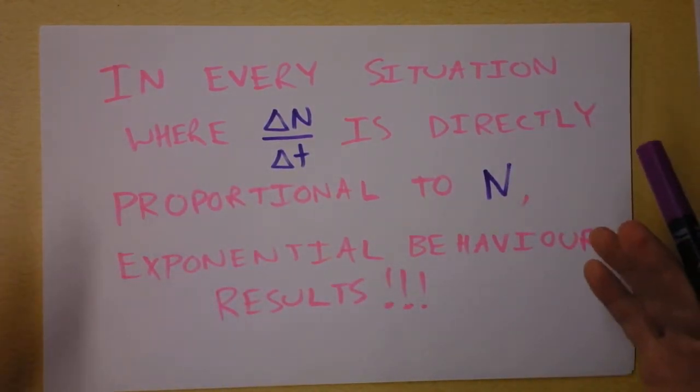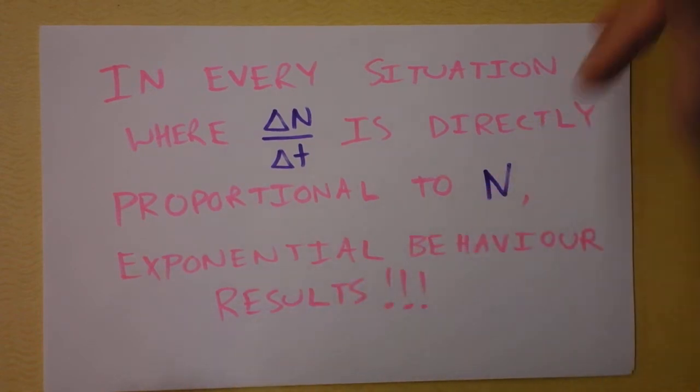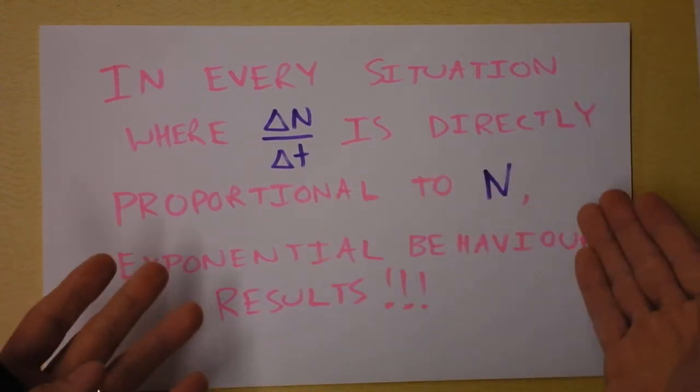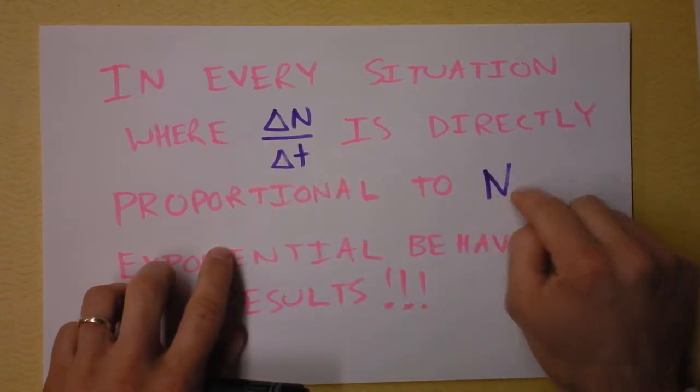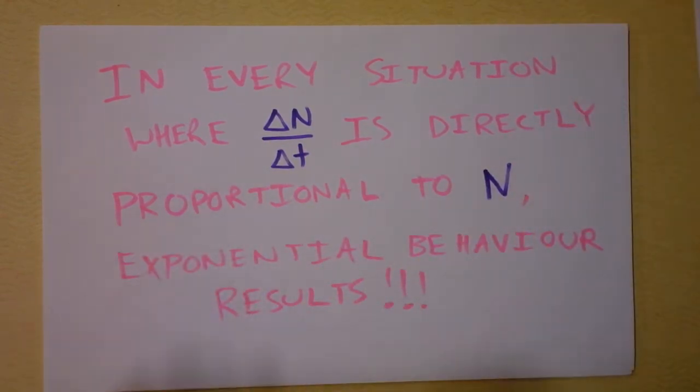This enables you to put a dollar into, for instance, the bank and then exponentially the interest. The interest depends on what you have, right? You get an interest rate that depends on how much money is in the bank. So exponential growth of your money will occur.